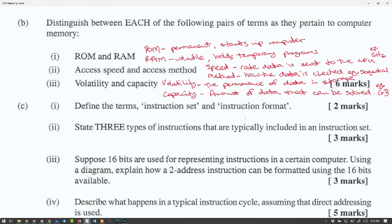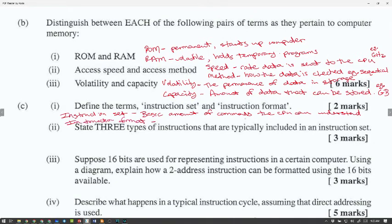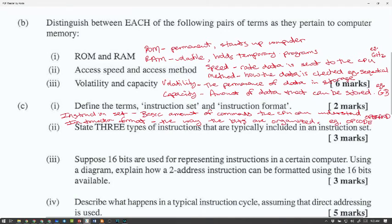Define the terms instruction set and instruction format. Basic amount of commands the CPU can understand. And the instruction format, the way the bits are organized. And you could give an example, like, you know, opcode and operand. Even though it's two marks, if you put opcode and operand, you're clearly showing that you know the instruction format. And the examiner will have no choice but to give you the marks. If you just put the way the bits are organized or you write it in a particular way that is not very straightforward, you'll end up in trouble. Wherever possible, you could give an example to prove that you know it. Because sometimes your answers are a little blurry.